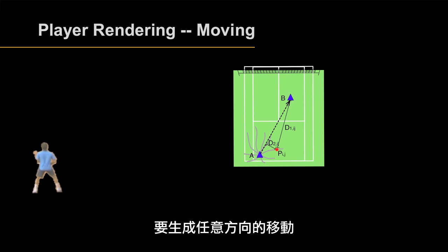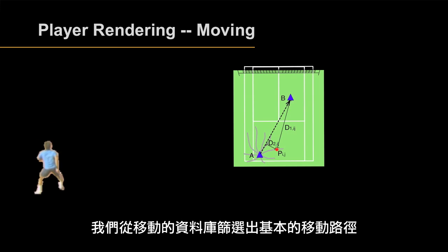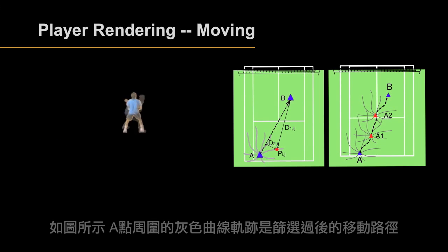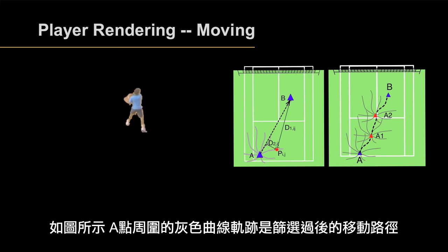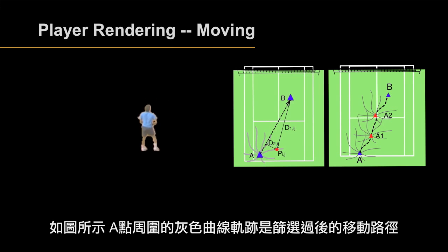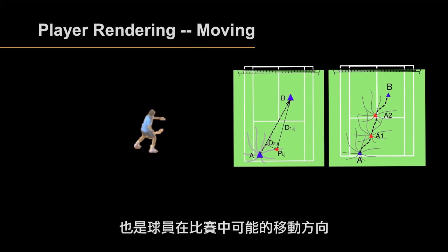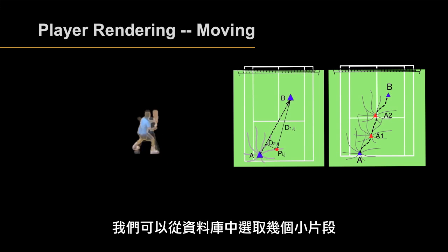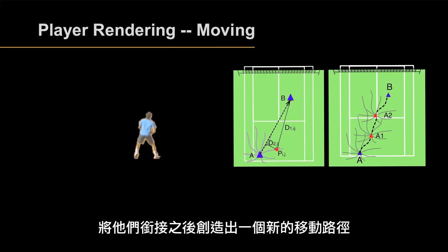To generate arbitrary direction of motion, we propose clip selection for moving of the player. As the figure shows, gray curves around point A are the trajectories of gathered motion clips and also the possible moving directions of the player. After selecting several smaller clips, we cascade them to create a new and longer one.